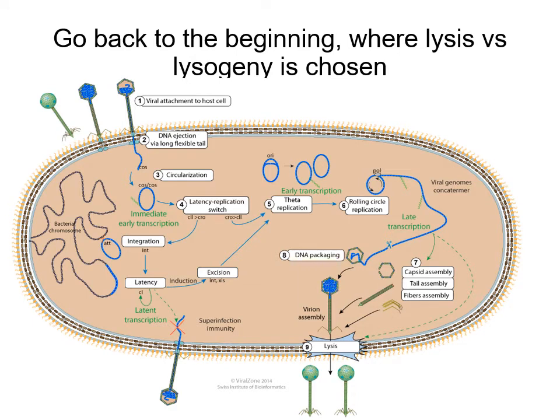Now we go back to the beginning where the choice is made between lysis and lysogeny. A great deal is known about the molecular details of this process. The phage DNA is injected into the cell and circularized by annealing and ligation of the cos sites. Then instead of proceeding to theta replication circles, the choice is made to insert the phage DNA into the chromosome as the beginning of the lysogenic cycle.